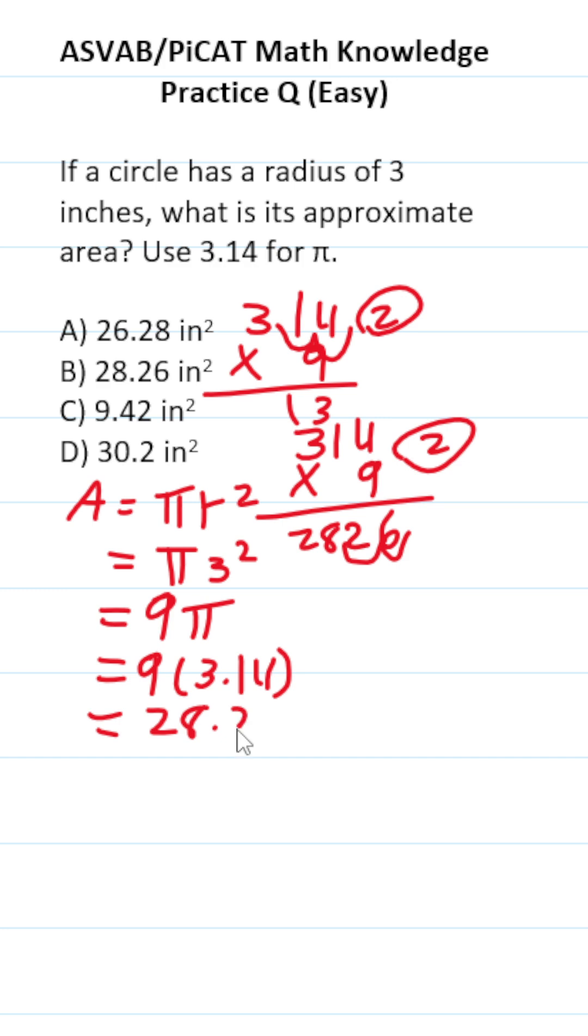Bring our two decimals back in. So we can see our area is going to be 28.26, which is answer choice B, 28.26 inches squared.